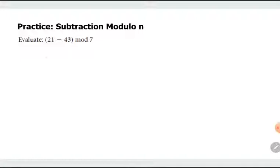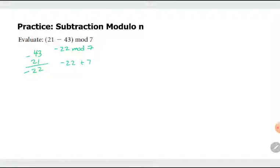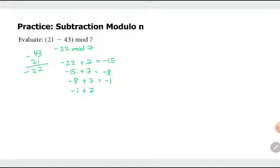Let's practice: 43 minus 21 in modulo 7 arithmetic. 43 minus 21 gives negative 22. Since we have a negative result, we add 7 continuously: negative 22 plus 7 is negative 15, plus 7 is negative 8, plus 7 is negative 1, plus 7 is 6. So the answer is 6.